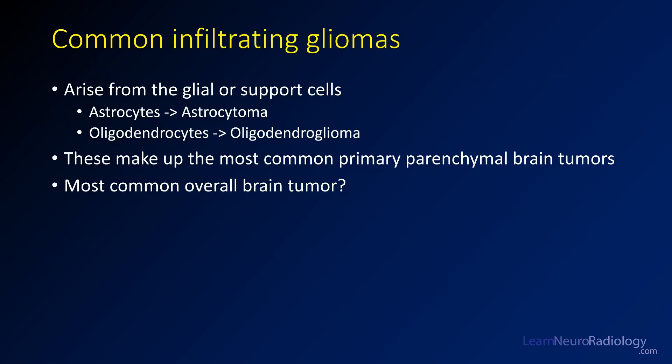Now let's move on to the infiltrating gliomas. Gliomas arise from the glial or support cells around the tissue. If they arise from astrocytes, you're talking about an astrocytoma. If they arise from oligodendrogliocytes — the cells responsible for myelination in the CNS — they're oligodendrogliomas. These are by far the most common primary parenchymal brain tumors.